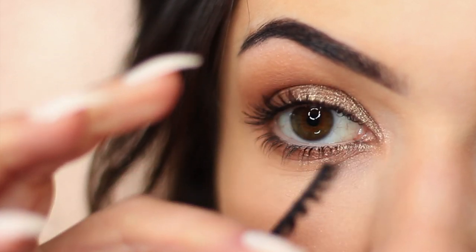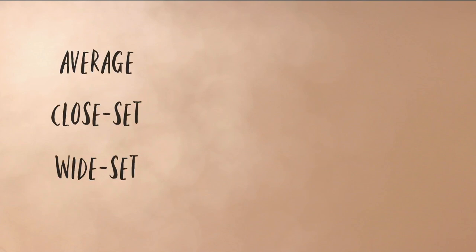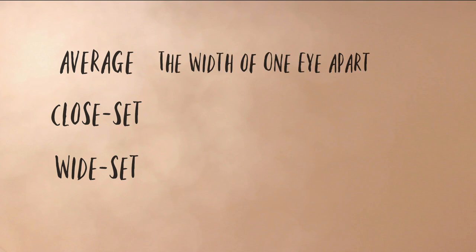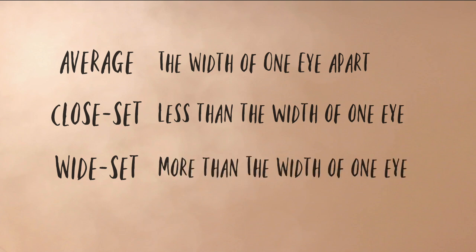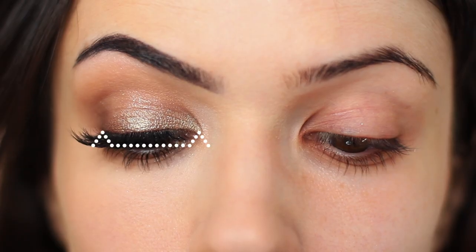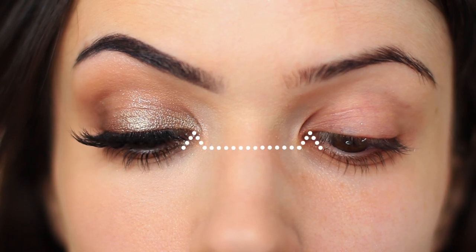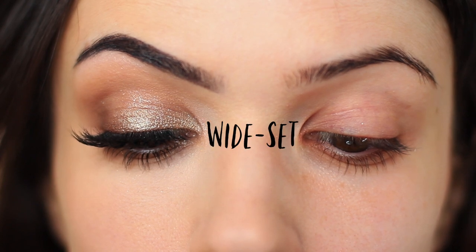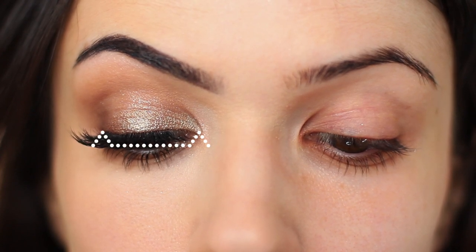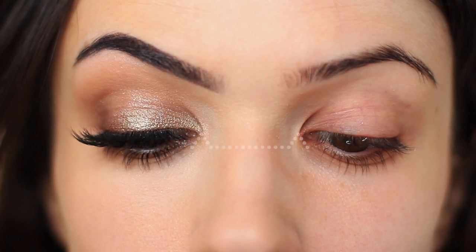Let's quickly refresh on both eye spacing and eyeshadow placement. Whether you are hooded, round, or any other eye shape, you still fit into one of three categories: average, close, or wide — referring to the distance between the eyes. Average spacing is the width of one eye length apart. Less than one eye length apart is close set; more is wide set. If placing one eye-width in the middle would poke you in the eye, you're close set. If there's room on either side, you're wide set. If it fits snugly in the middle, you have an average eye space.